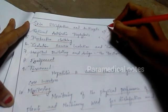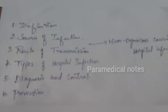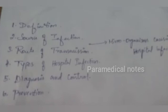Now let us revise about nosocomial infection. If asked in exam, write: first — definition; second — source of infection; third — microorganisms causing hospital infection; fourth — route of transmission; fifth — types of hospital infection; sixth — diagnosis and control; seventh — prevention.